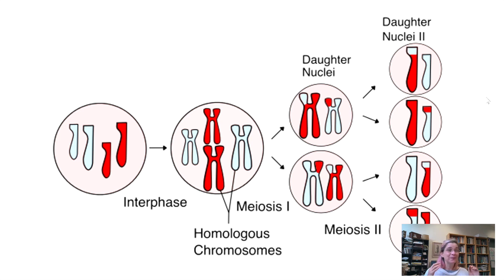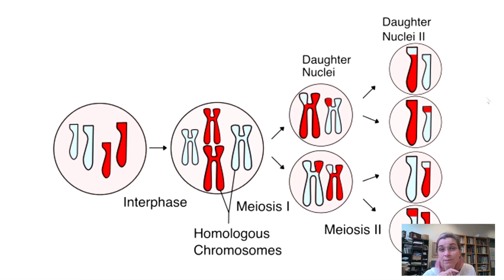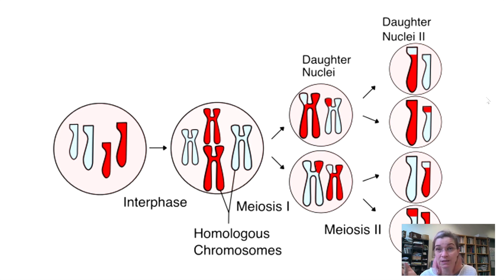Have you figured out what the special circumstances are for meiosis? That's right — the formation of sperm and egg cells: spermatogenesis and oogenesis. We'll talk more about that towards the end of this semester, but for now, meiosis is special for sex. And sex is a great thing in evolution — not just for some obvious reasons, but because it generates new genetic combinations and variation.